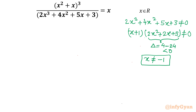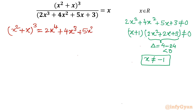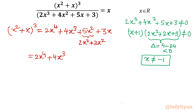Let's come back to our equation and cross multiply it. After multiplication, the right-hand side expands as: 2x⁴ + 4x³ + 5x² + 3x. We split 5x² into 2x² + 3x², then group terms: (2x⁴ + 4x³ + 2x²) in one bracket and (3x² + 3x) in another bracket.